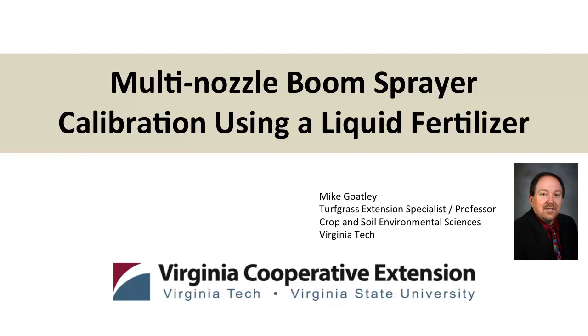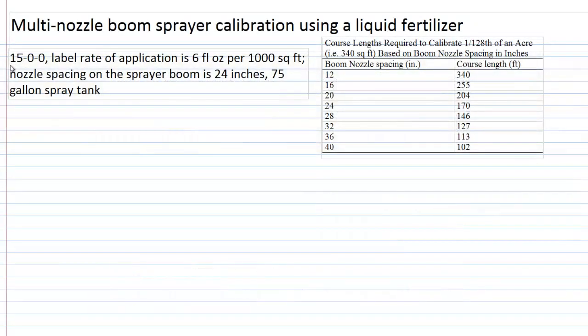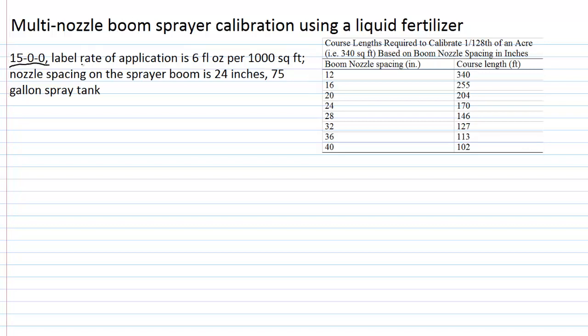Let's look at an example of multi-nozzle boom sprayer calibration, and for this situation, we're going to use a liquid fertilizer. This fertilizer is a 15-0-0 analysis, which means it's 15% nitrogen by weight, and its labeled rate of application, looking at the actual product on the label and what it says to apply, is 6 fluid ounces per 1,000 square feet.